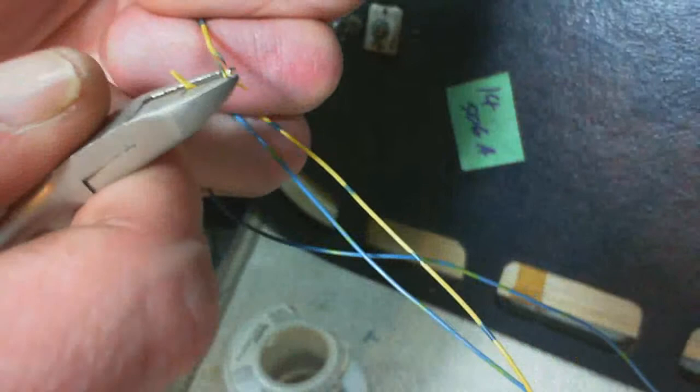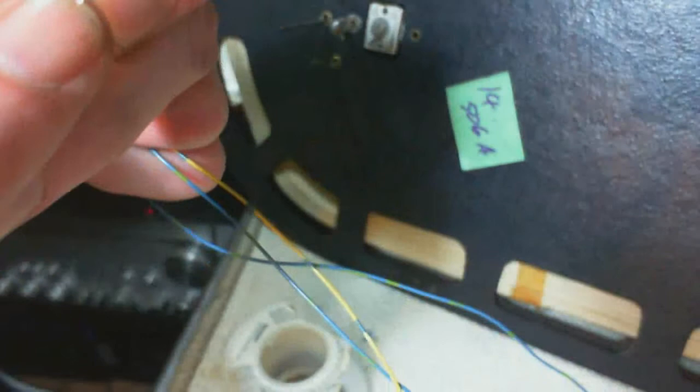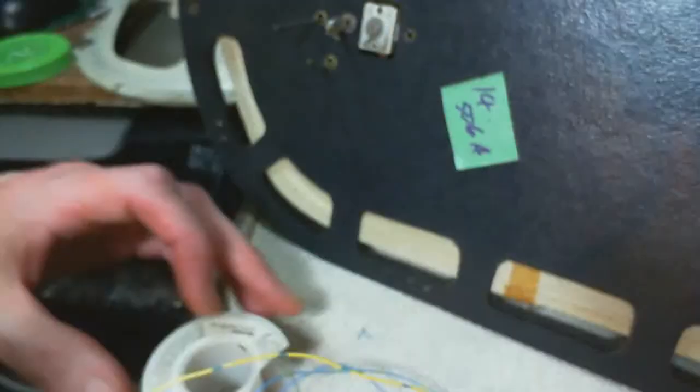Pretty crude way to pull off insulation, but I've been doing it so long. What you don't want to do is nick the wire right up in here, which is quite likely. Then one or two bends breaks off.